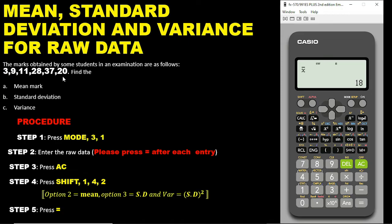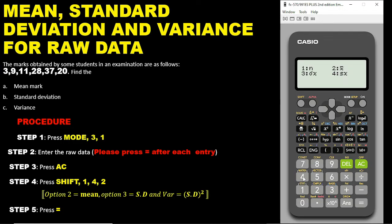The data is still intact — pressing AC preserves it. Now for the standard deviation, repeat step 4: press Shift, then press 1, then pick option 4. This time pick option 3 for standard deviation, then press equals. You now have the standard deviation for this dataset.